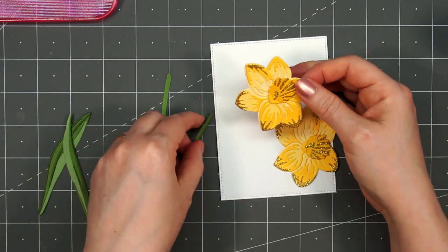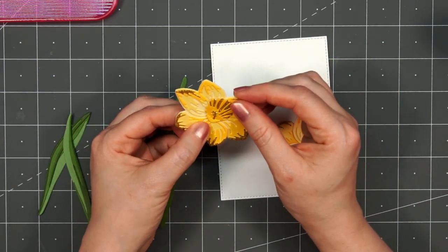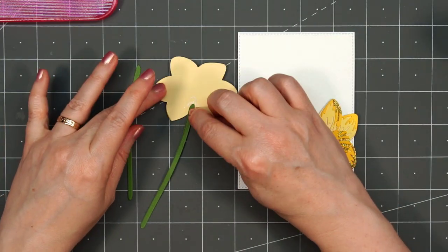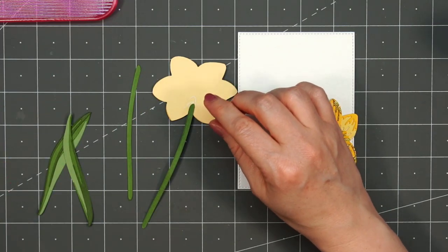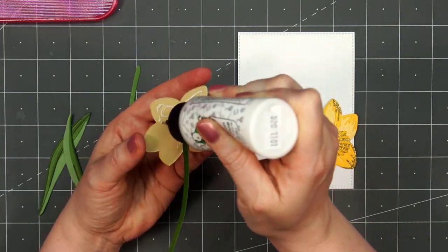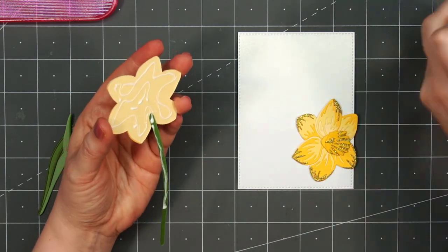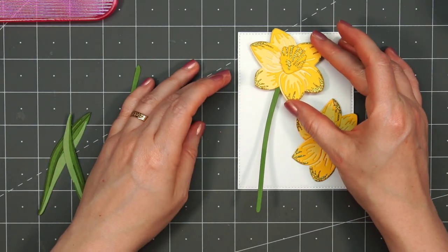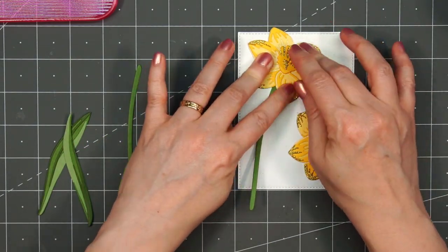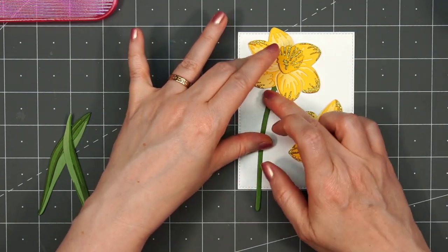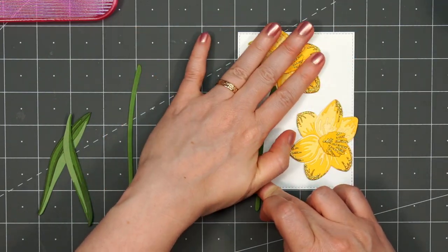I'll attach the stem behind the flower on the left, just putting a little bit of liquid adhesive, holding that in place. Then I'll put more liquid adhesive on the back and adhere this first flower. That one's going to be a little bit taller. The flower on the right will be shorter, so it'll be tucked underneath that first flower.